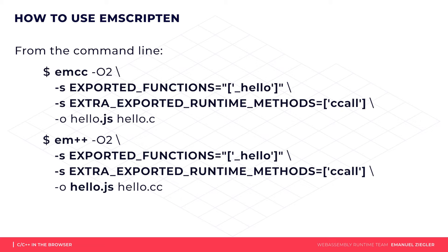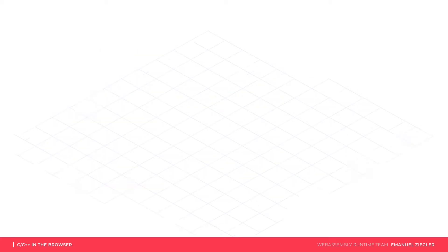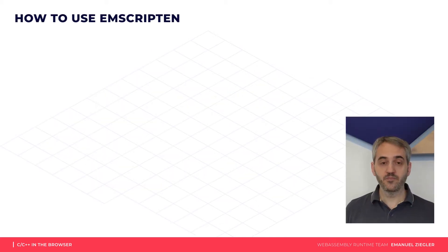In this example, I assumed a simple hello world program that has one function — hello — which we want to call. Note that I have added an underscore before the function name for technical reasons. We also want to use the ccall function provided by Emscripten to call this function later.